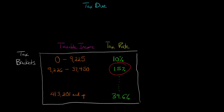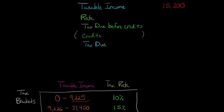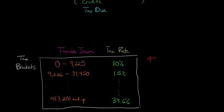This is actually our marginal tax rate — it applies only to our highest income. Think of it like counting off dollar bills from the $15,200. The first $9,225 is taxed at 10%, which gives us tax of $922.50. But we made more than $9,225, so we need to figure out how much more.